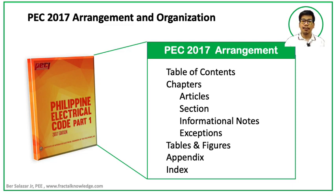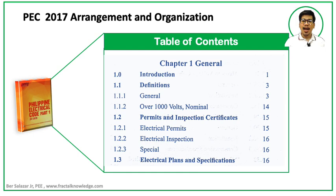The code is arranged in the following order in the table of contents: chapters, articles under chapters, sections, informational notes or fine print notes, exceptions, tables, figures, appendix, and index. The table of contents displays the layout of chapters and articles as well as page numbers.